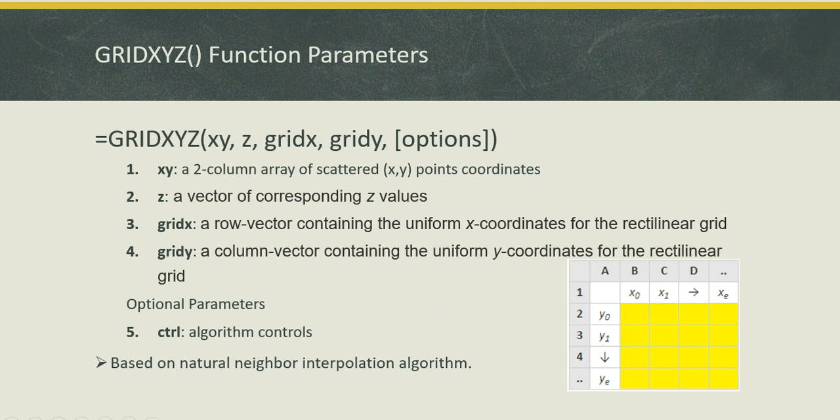Let's begin by introducing the function GRIDXYZ. GRIDXYZ takes four required parameters. The first parameter is a two-column array of your scattered XY points coordinates. The second parameter is the corresponding Z values at these points. The third parameter is a row vector containing the uniform X coordinates for the rectilinear grid and the fourth parameter is a column vector containing the uniform Y coordinates of the rectilinear grid.